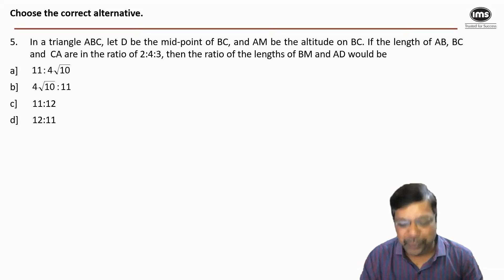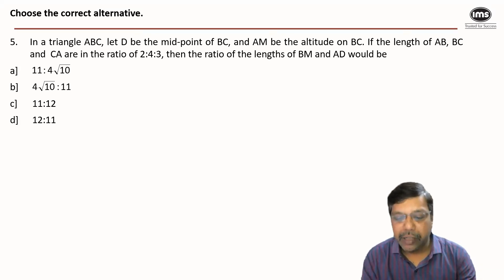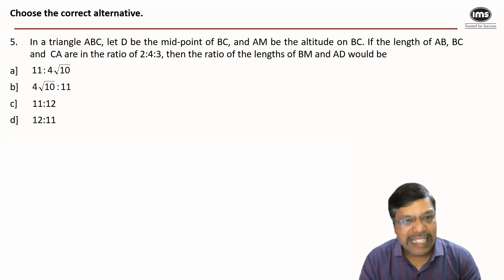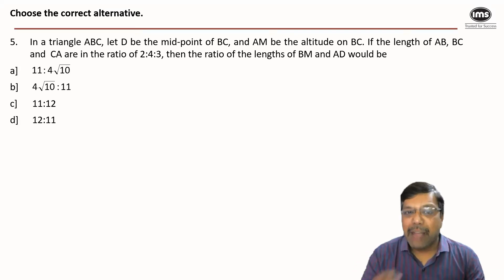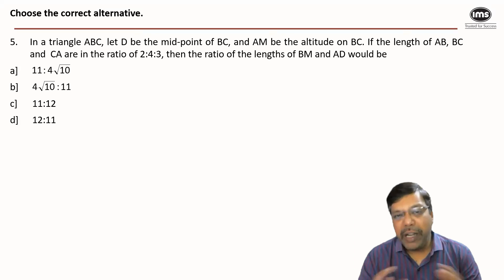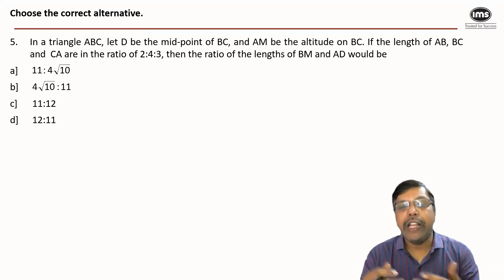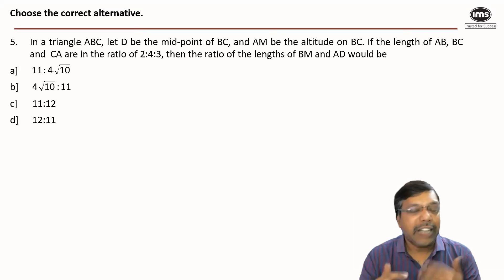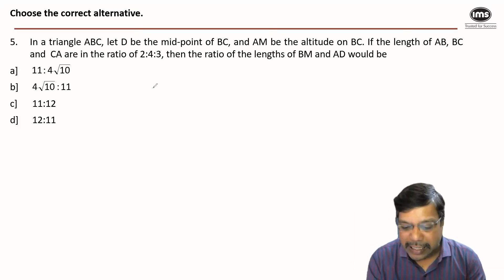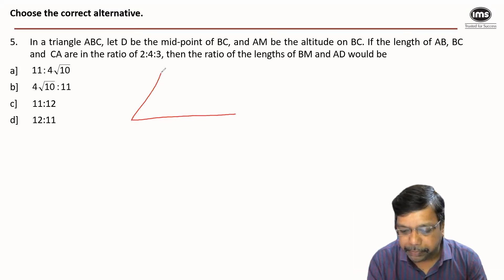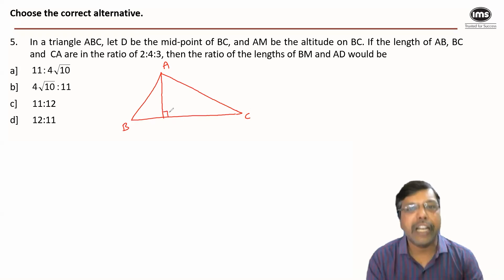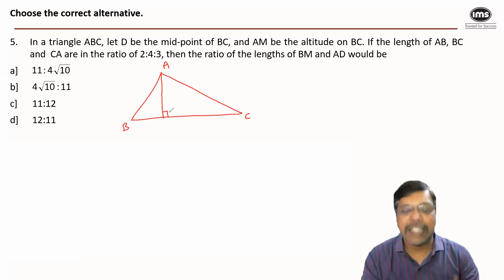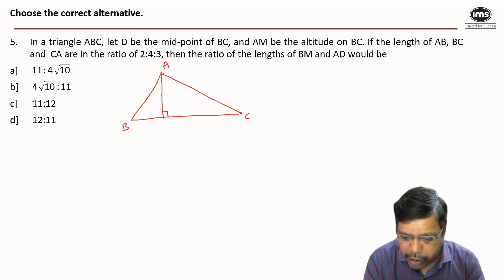Now let's look at question number five. There is a triangle ABC; D is the midpoint of BC, meaning AD is the median, and AM is the altitude. In geometry, half the job is drawing the picture correctly. AM is the perpendicular line drawn from vertex A to the opposite side, and D is the midpoint of BC, so AD becomes the median.